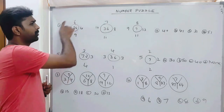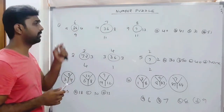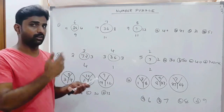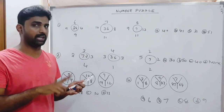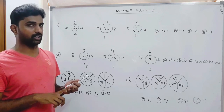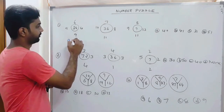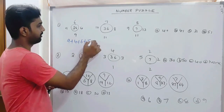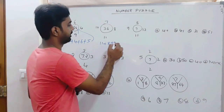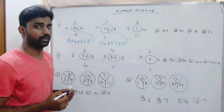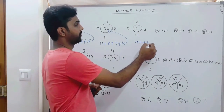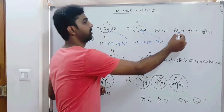One approach: here we have single digits outside and two digits inside. Let us try single digits or double digits — either plus or multiplication. So 9 plus 4 is 13, 13 plus 6 is 19, 19 plus 5 is 24. It is following a plus series. Then 11 plus 8 is 19, 19 plus 7 is 26, 26 plus 10 is 36.